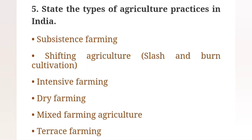Question 5: State the types of agriculture practices in India. Types include: Subsistence farming, Shifting agriculture (slash and burn cultivation), Intensive farming, Dry farming, Mixed farming, and Terrace farming.